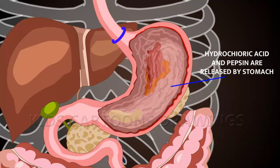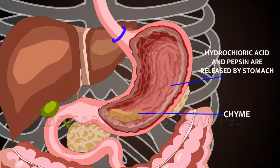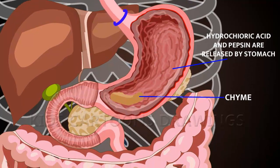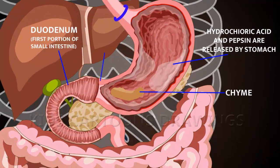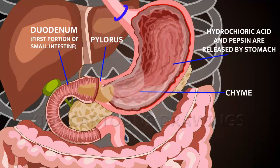When chyme reaches the proper softness, the pylorus opens. The chyme is slowly released into the first portion of the small intestine called the duodenum, and contractions continue into the duodenum.